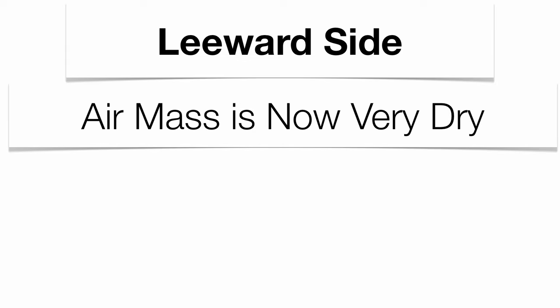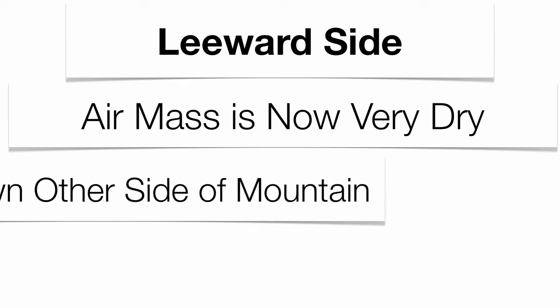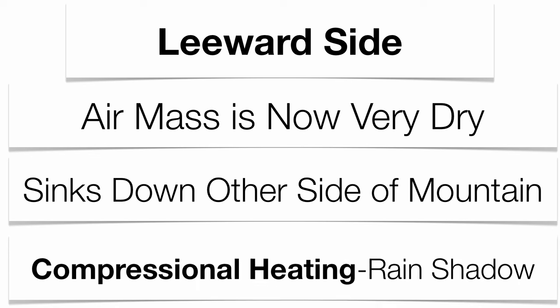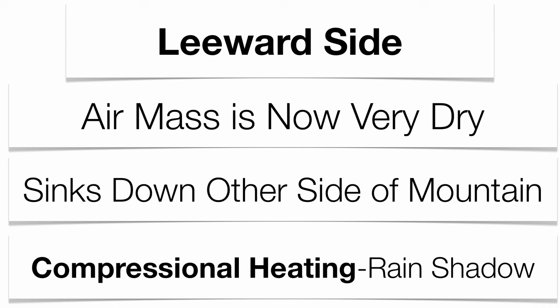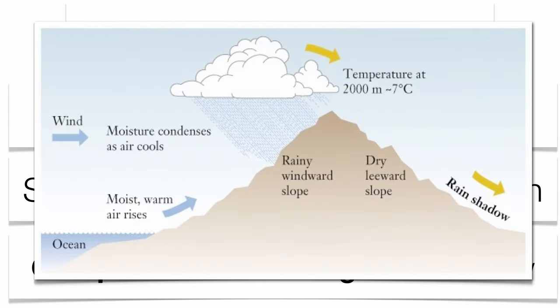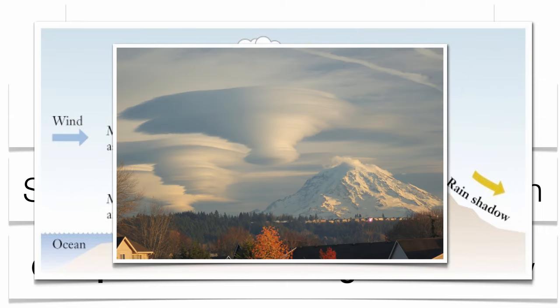Once that air mass drops all of its moisture on the windward side, it's very cold and dry. So it descends down the leeward side of the mountain because it's a little bit more dense. As it sinks down, it starts to heat up because the pressure becomes greater as you travel down the mountainside — that's what we call compressional heating. Because the air mass is so dry, the leeward side of the mountain has what's called a rain shadow effect, which is why you find deserts on that side. You can see the cloud formations formed due to orographic lifting in the diagram.